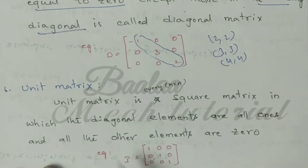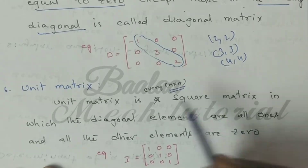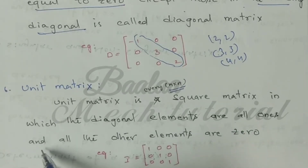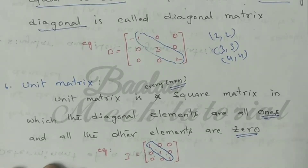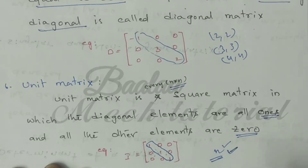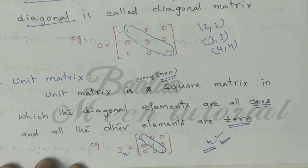Next is unit matrix. A unit matrix is an n by n square matrix in which the diagonal elements are all ones and all other elements are zero. It is denoted by I-n, where n represents the size of the unit matrix.